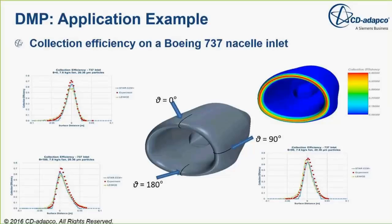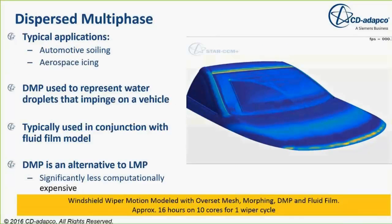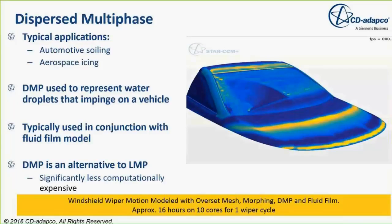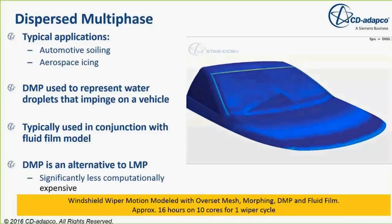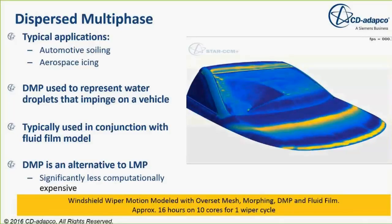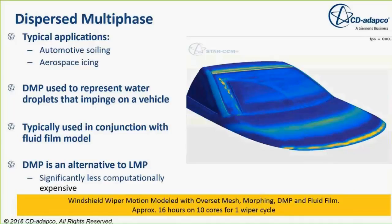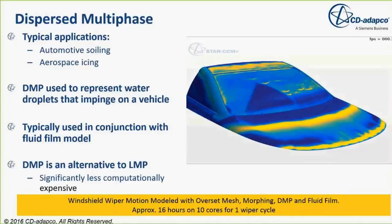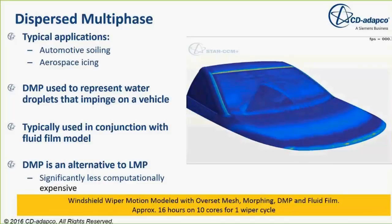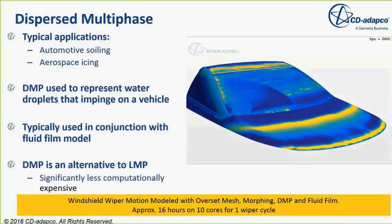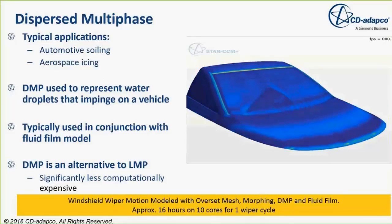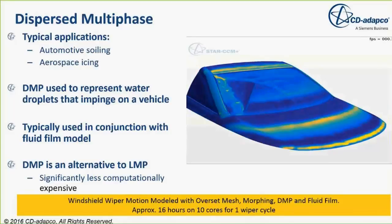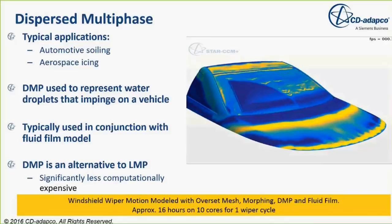The DMP predictions are fairly accurate and comparable with those other predictions. The DMP option can also be used in automotive soiling and aerospace icing. Here is an example where windshield wiper motion is modeled with an overset mesh. The DMP and fluid film options are invoked and, with time, the formation of a film on the surfaces is captured. This type of simulation takes approximately 16 hours on a 10-core machine to complete one wiper cycle.